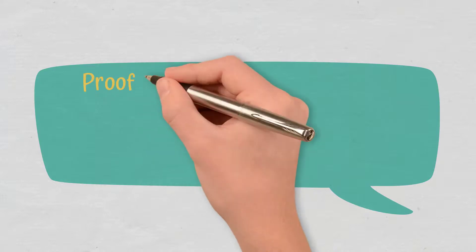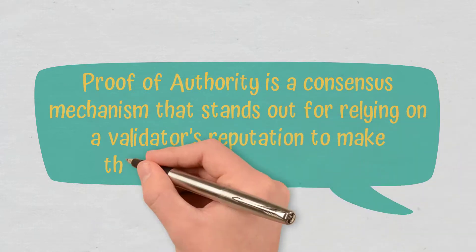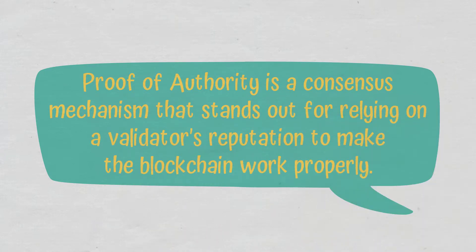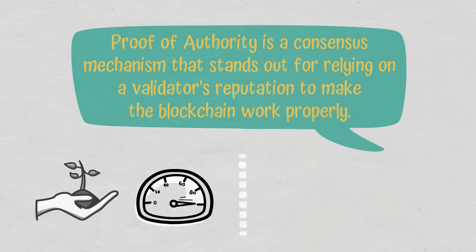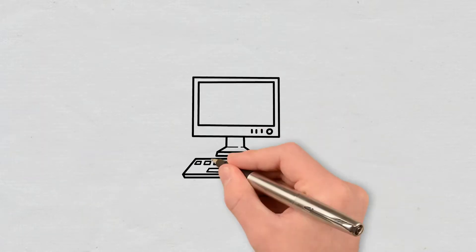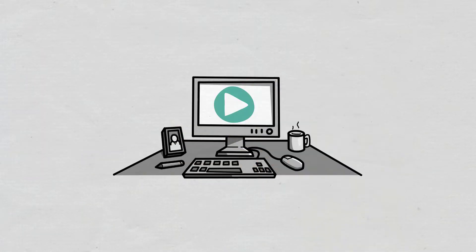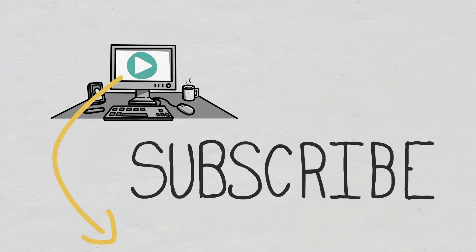Proof of Authority is a consensus mechanism that stands out for relying on a validator's reputation to make the blockchain work properly. While it's a more environmentally friendly method than Proof of Work and it is faster, the network will always be limited by the small number of validators active, and by the fact that, by design, it can't be used in a decentralized manner. I hope you enjoyed today's video. If you have other questions about Proof of Authority, don't hesitate to tell us in the comment section. Don't forget to subscribe to the Cryptomatics channel if you want to stay up to date with the latest concepts in the crypto sector.